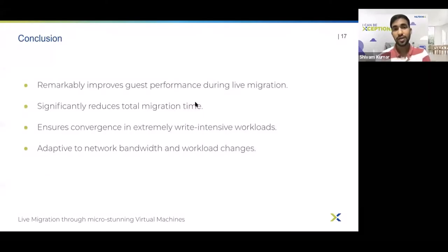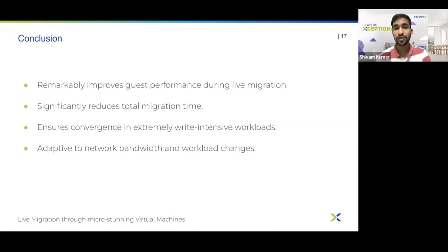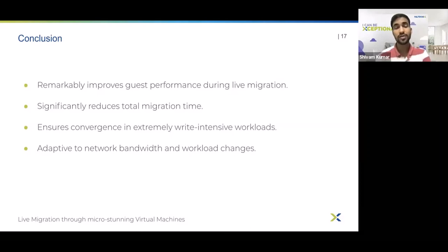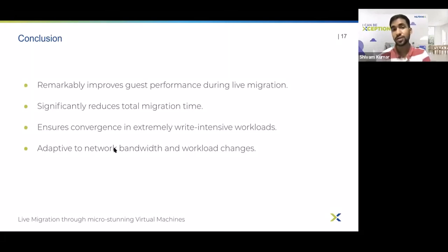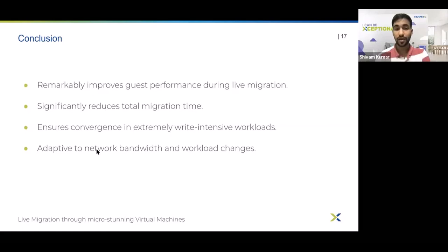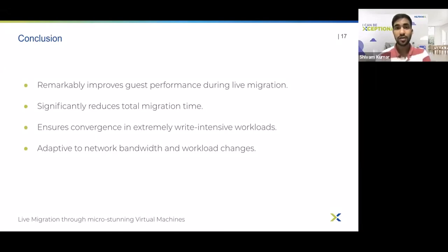In summary, micro-stunning has a lot to offer: it significantly improves guest performance during migration, helps migration converge in cases where the current QEMU scheme cannot converge even at the cost of guest performance, helps converge migrations in less time, and is very adaptive to network bandwidth and workload changes. For example, if a very heavy write-intensive workload starts in the middle of a migration, micro-stunning finds the right throttle right away and throttles the VM optimally if required.